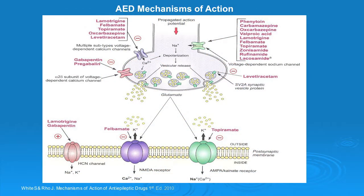Putting this onto the same cartoon — where do our major drugs work? Our traditional antiepileptic drugs work at sodium channel modulation. On the inhibitory side, our major drugs working at modulation of GABA transmission have been the benzodiazepines or the barbiturates. Other newer molecules, such as felbamate and topiramate, also work by modulating GABA transmission to some degree.